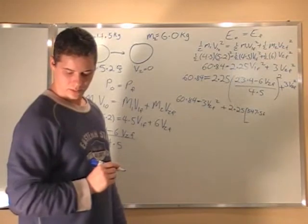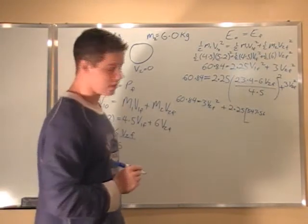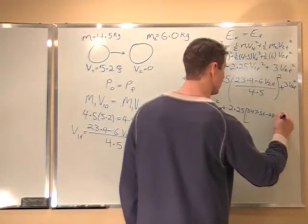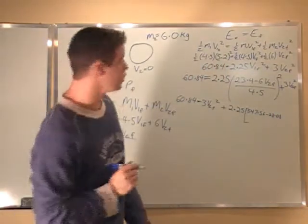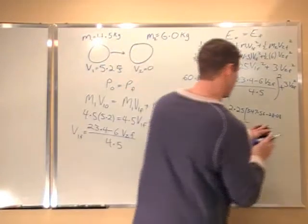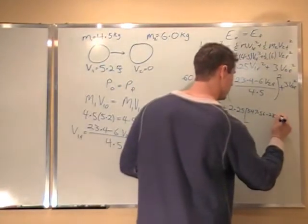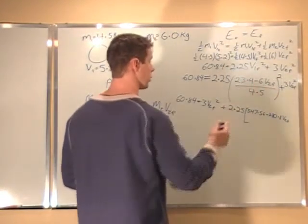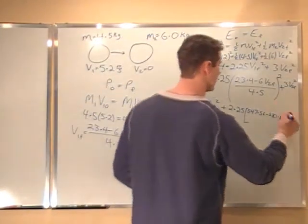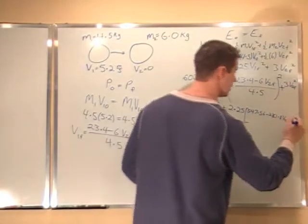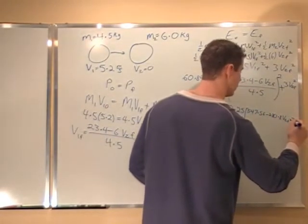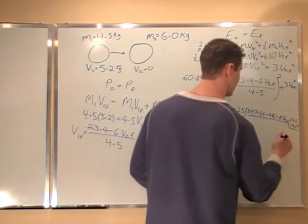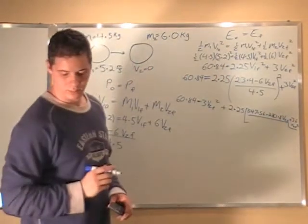That's 23.4 squared. So that's my middle term, where I multiply 6 V2 F times 23.4 and that's twice. So I'm going to multiply this here. I get minus 280.8 V2 F. And then I get plus 36 V2 F squared. All over 4.5 squared, which is 20.25.